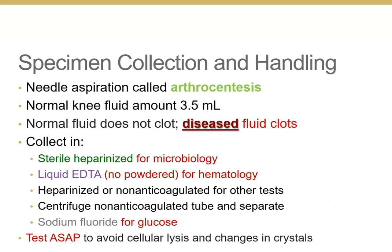How do we get the fluid? We stick a needle into the joint cavity and withdraw fluid using a syringe — this procedure is called arthrocentesis. A normal knee contains about three and a half milliliters of fluid, which is really not a lot.